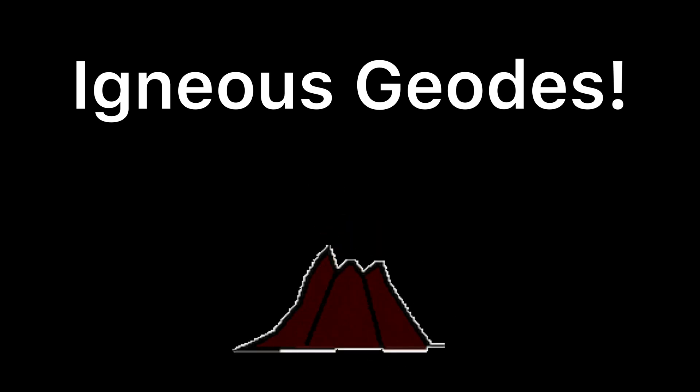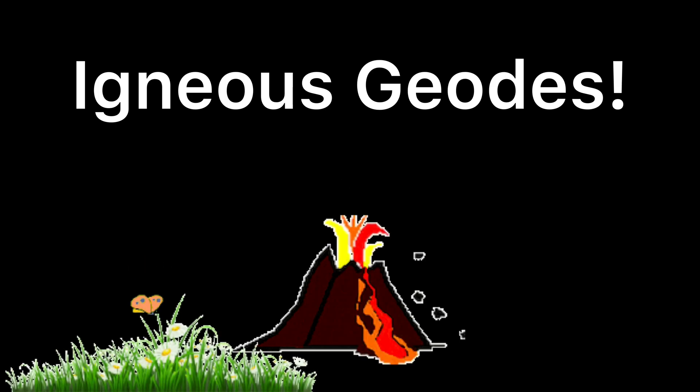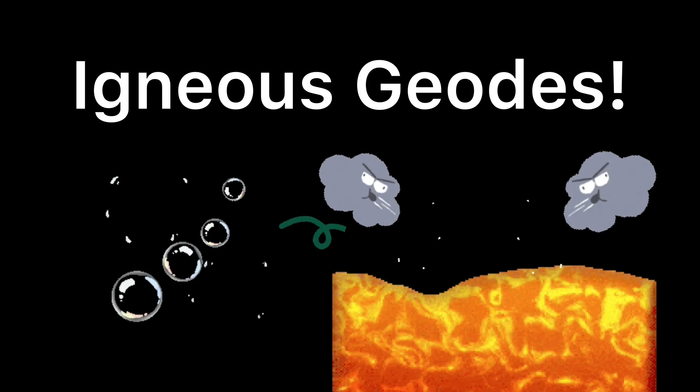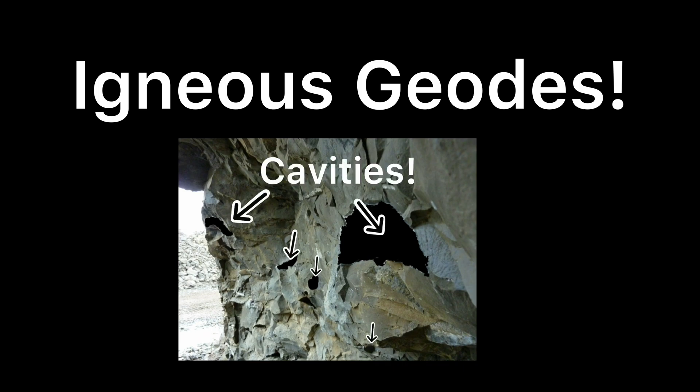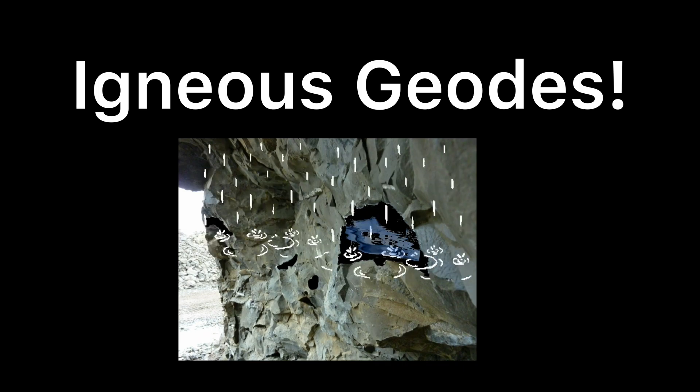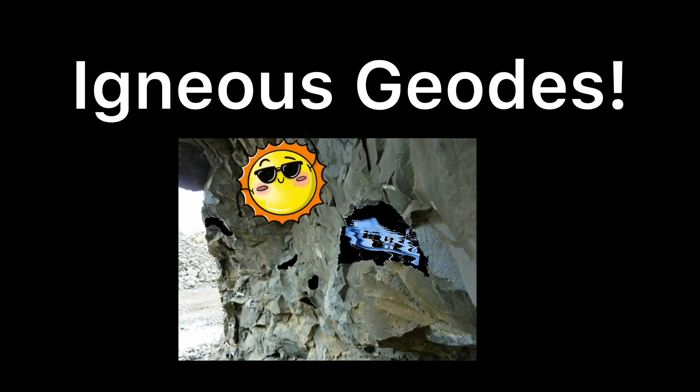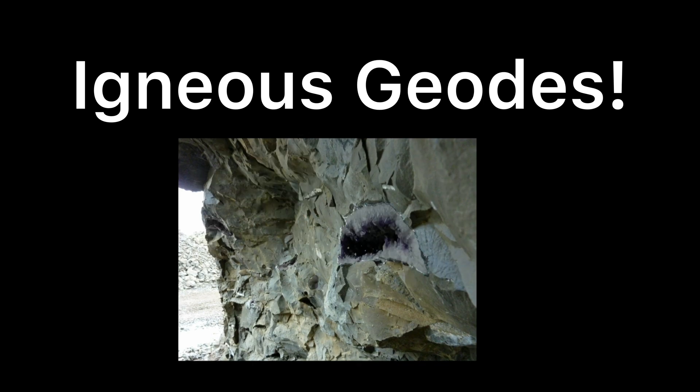There are two definitive ways that we know geodes can form. First off, and the typically more favorable type for collectors, are igneous geodes. As the name implies, these geodes form as a byproduct of volcanic eruptions both on land and at sea. During those eruptions, gas bubbles get caught in rapidly cooling lava, leaving behind perfectly — or sometimes not so perfectly — round cavities. Later on, mineral-rich waters seep into these cavities, and over time that water evaporates, and based on what minerals are left inside, we have crystals that form.